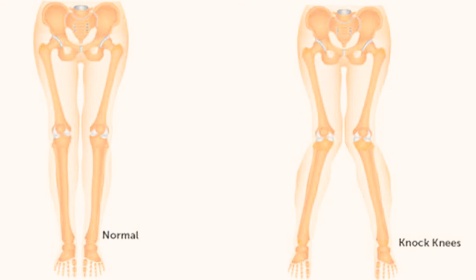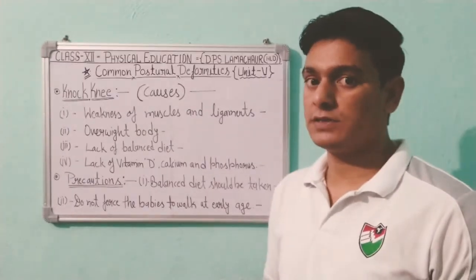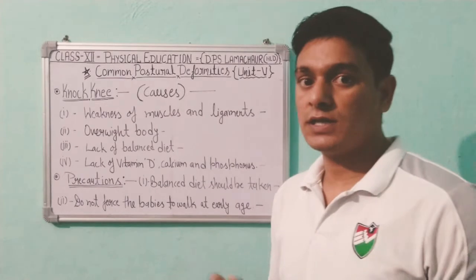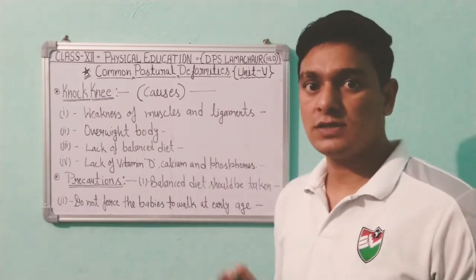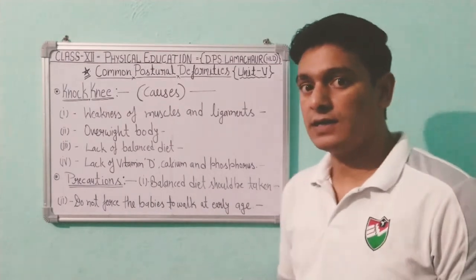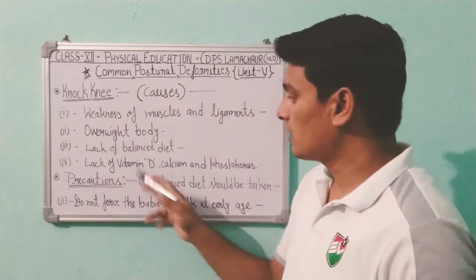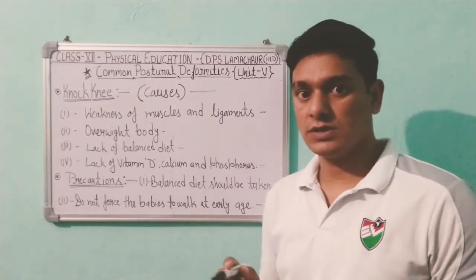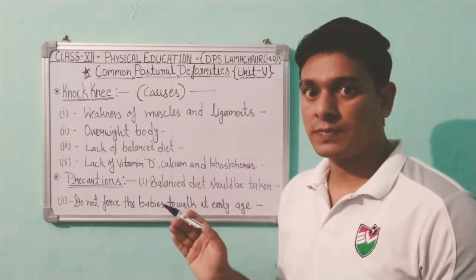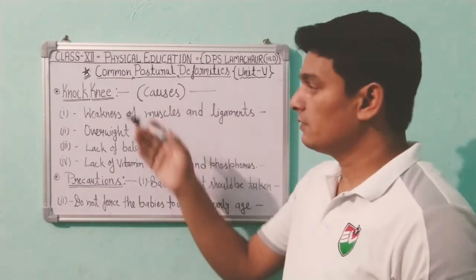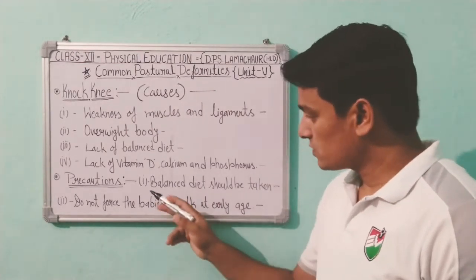The causes of knock knee include: weakness of muscles and ligaments — if someone has weak muscles and ligaments, there is a chance of this deformity. Next is overweight or obesity. Next is lack of a balanced diet — if someone is not getting proper nutrition, there is a chance of this deformity. Also, lack of vitamin D, calcium, and phosphorus, which are necessary to develop bones and joints, can lead to knock knee.